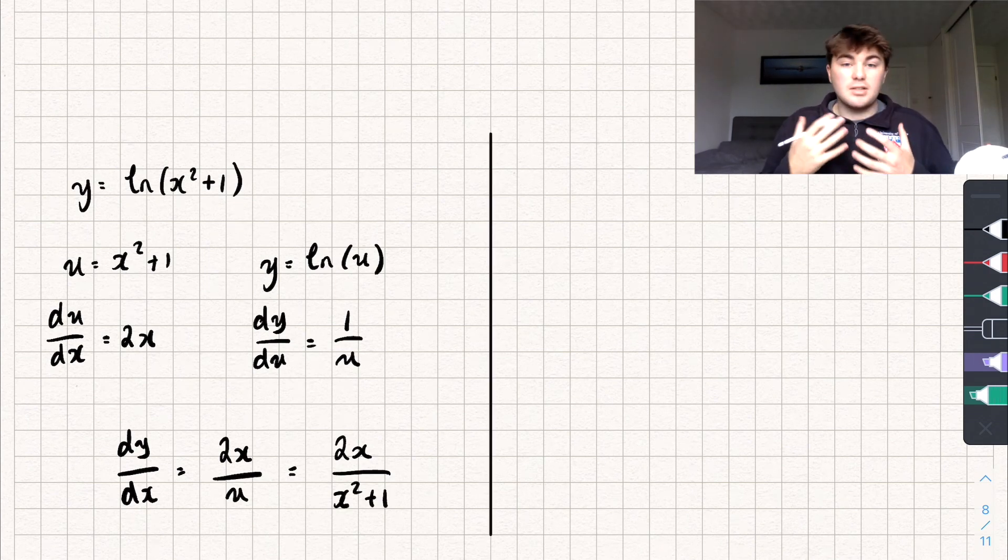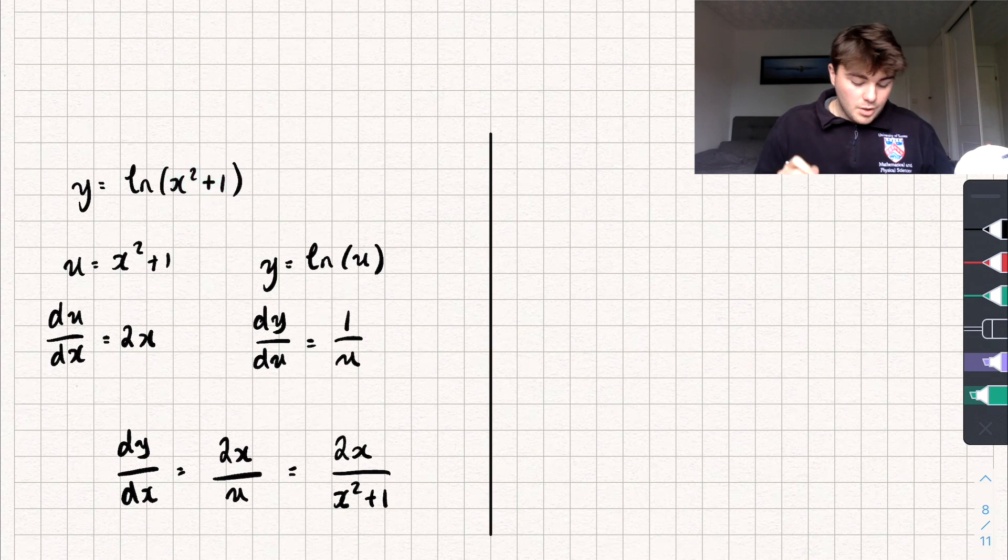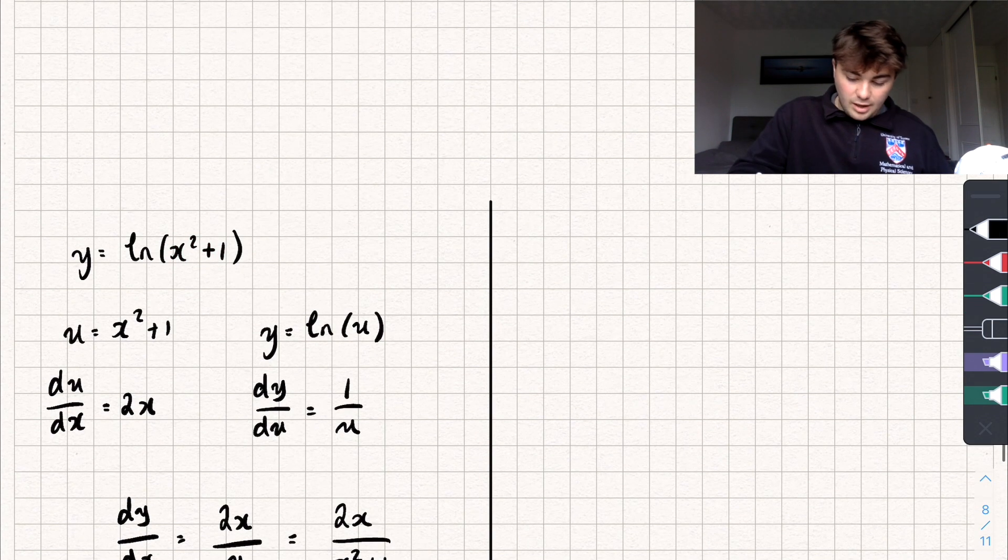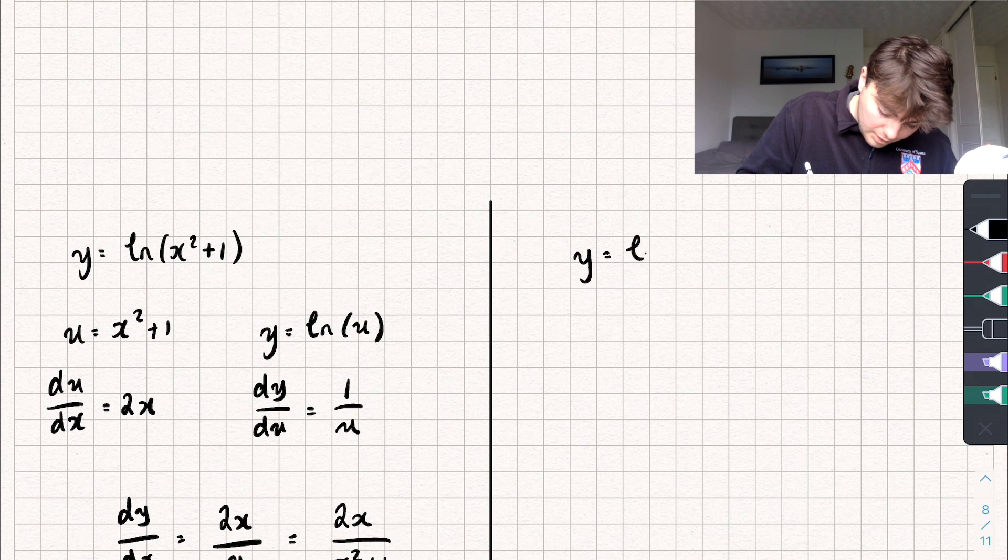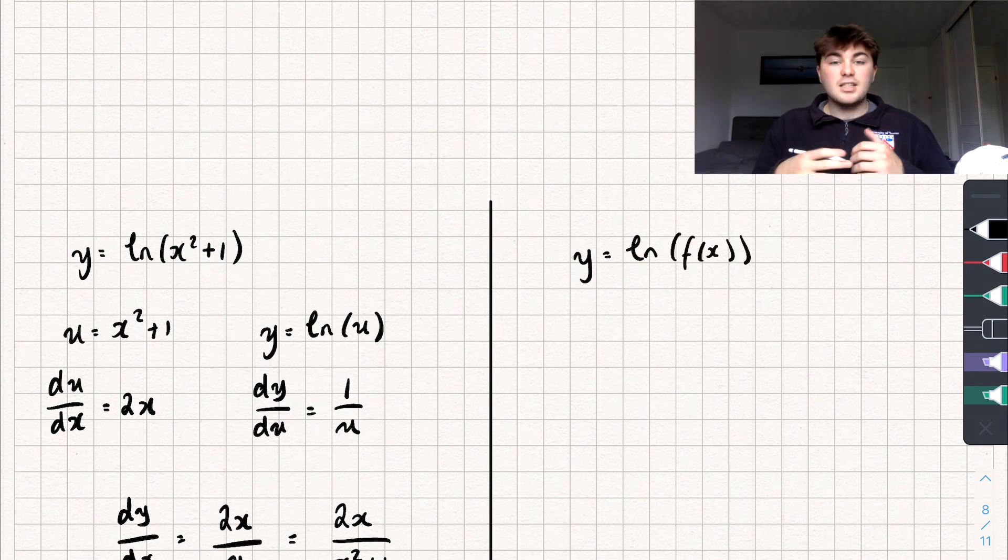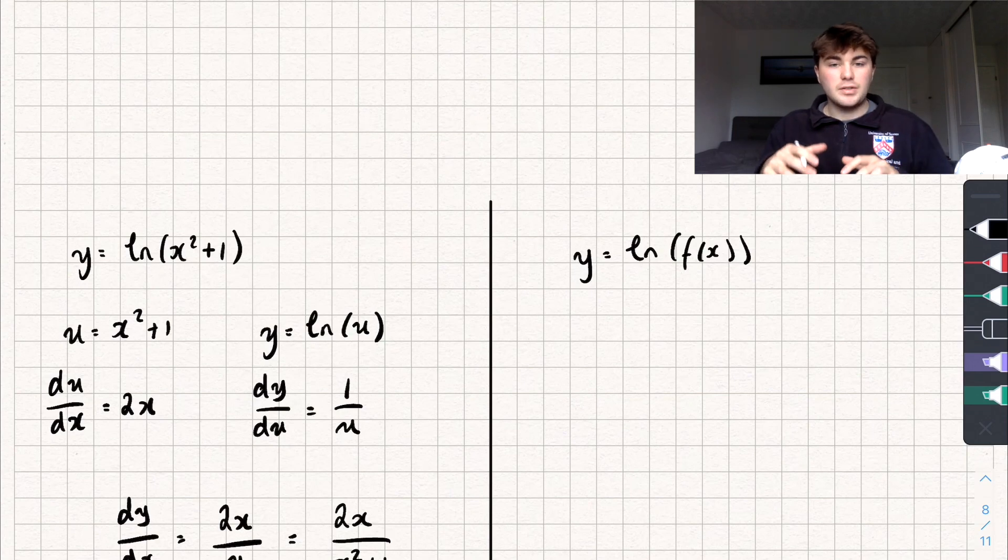So earlier I said that this is the natural log with a function inside of it. So let's see if we can generalize this. So say we have something like y equals the natural log of a function of x like this. Let's see if we can get a rule to help us take the derivative of stuff like this.